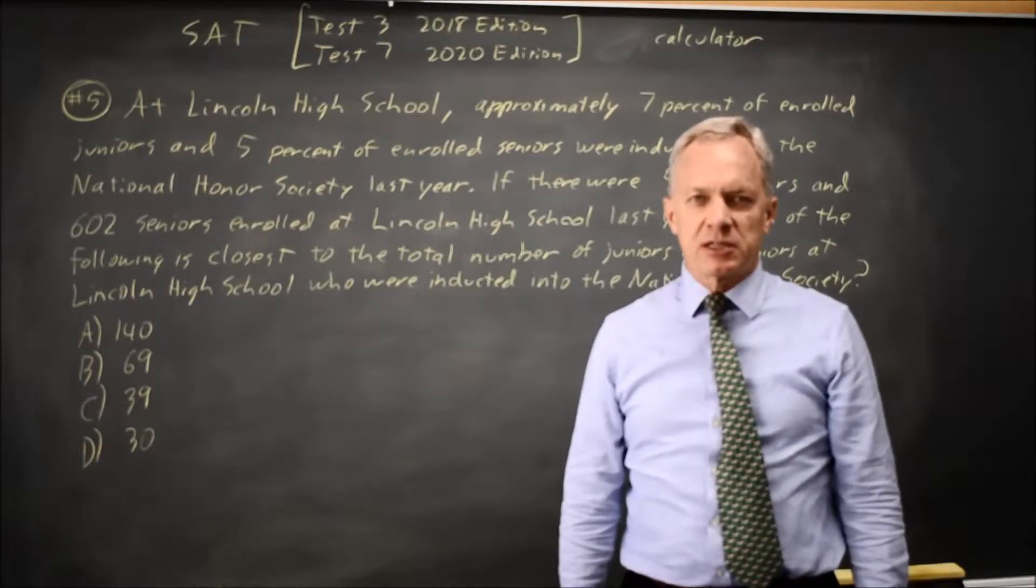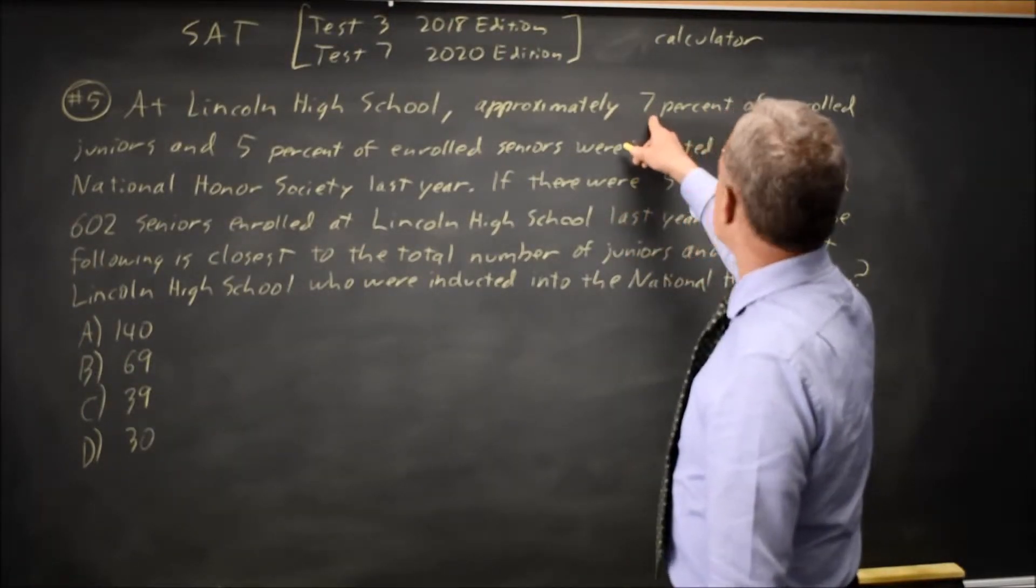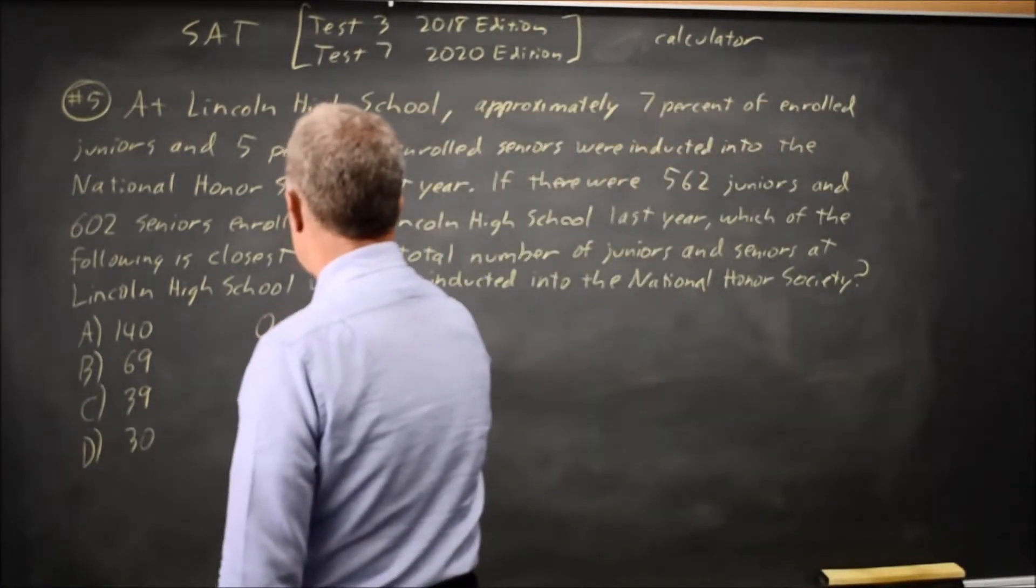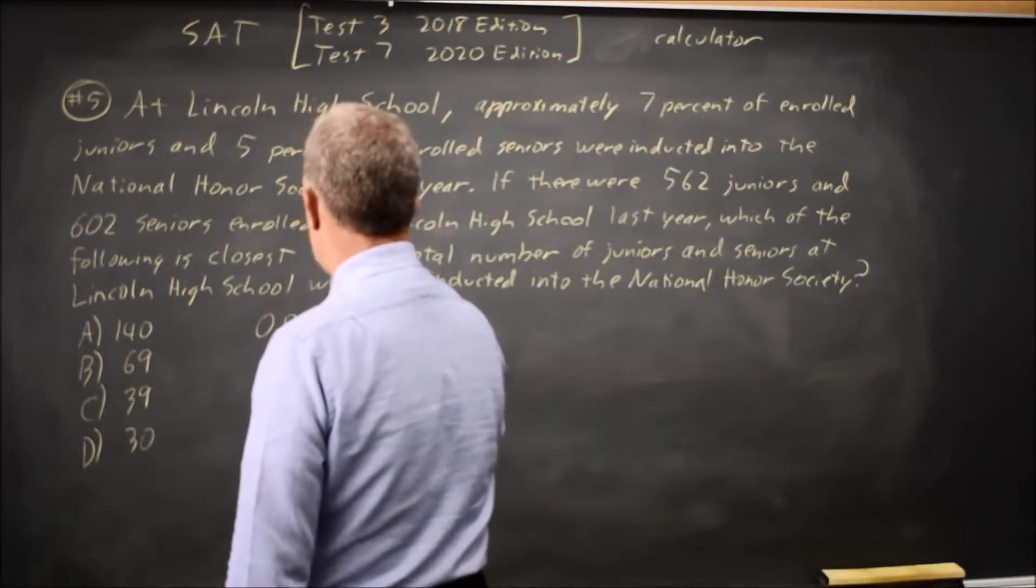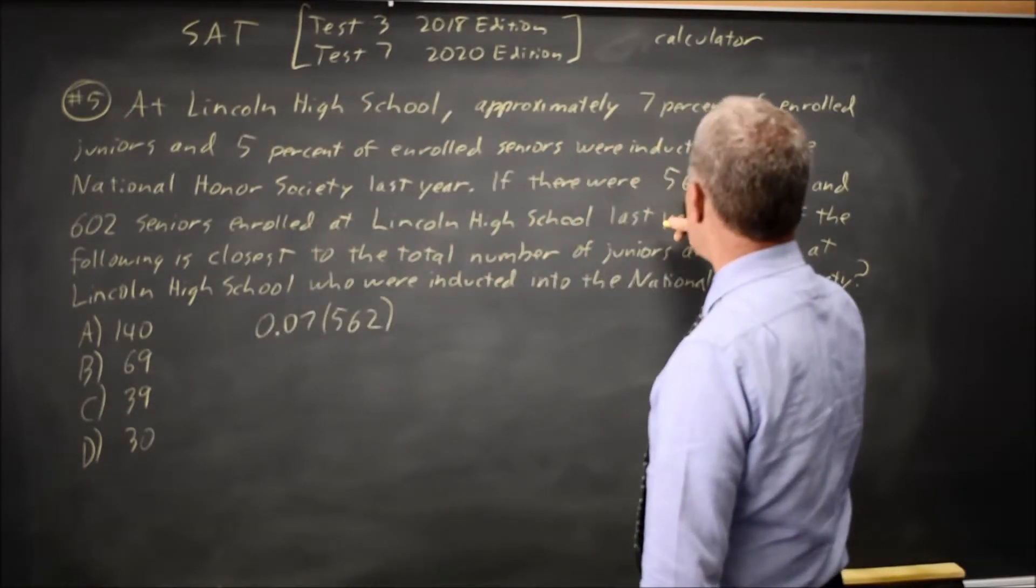Given the percent of juniors, number of juniors, percent of seniors, and number of seniors. So we have 7% of 562, the percent of enrolled juniors times the number of enrolled juniors,